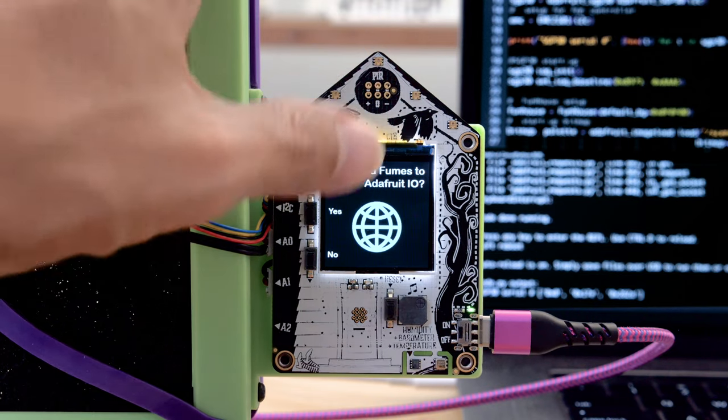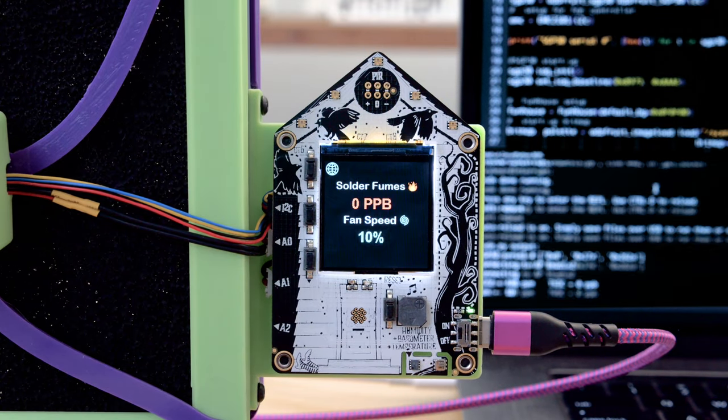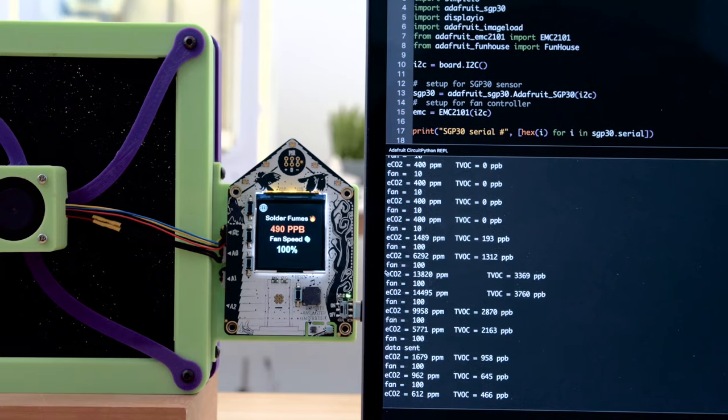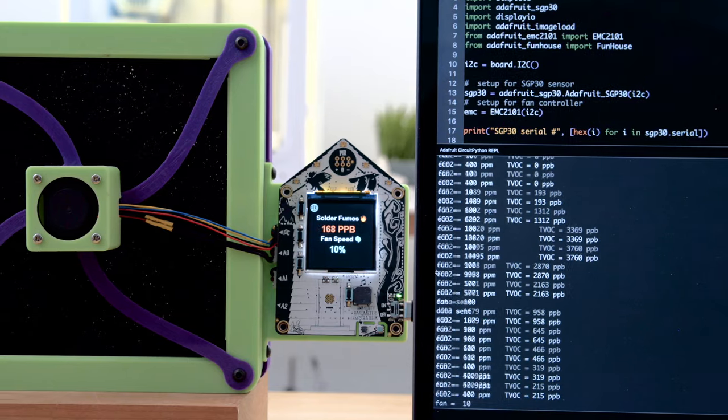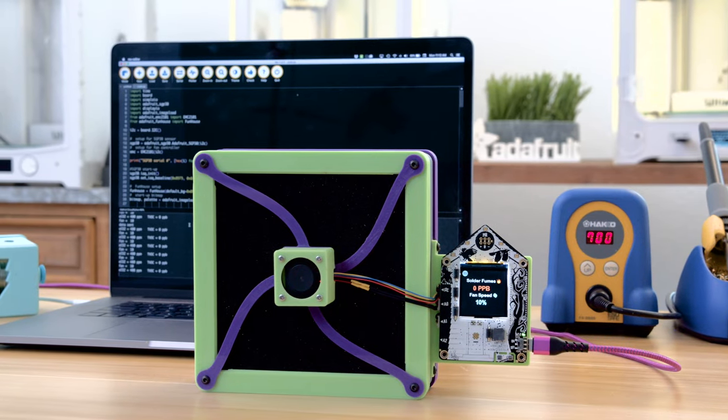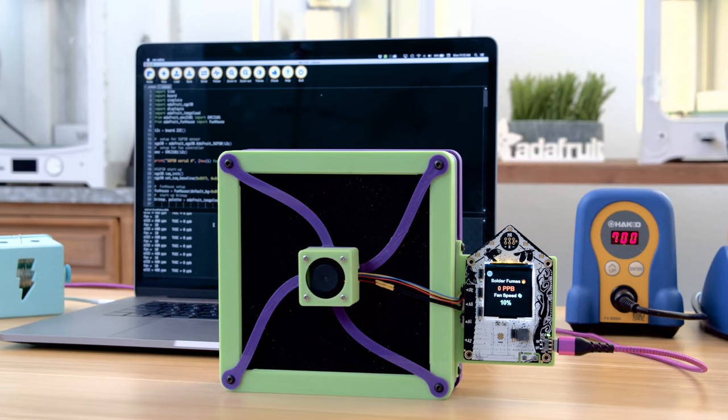On boot up you can decide to connect to WiFi and log data to a feed using Adafruit IO. Text objects are updated on the display and values are printed in the serial console. Be sure to check out the code walkthrough by Liz on the Adafruit Learn system.